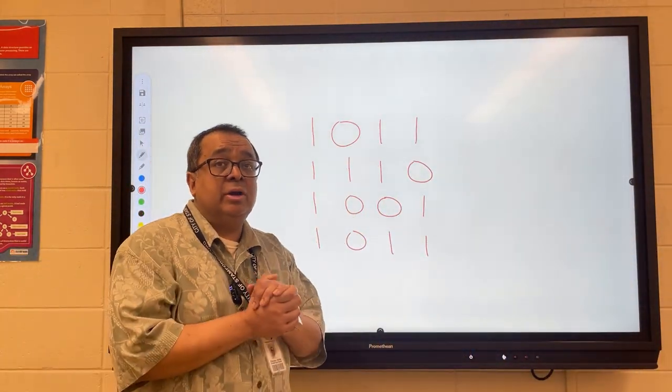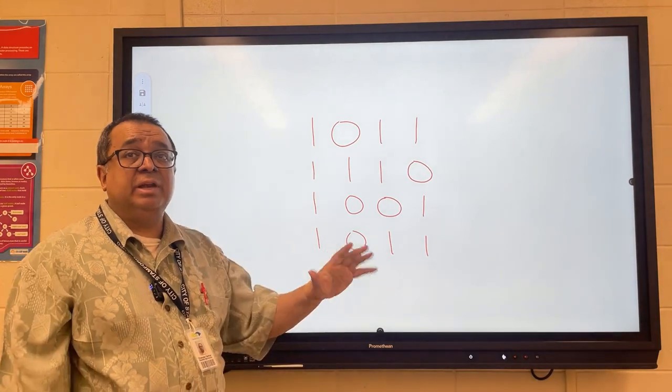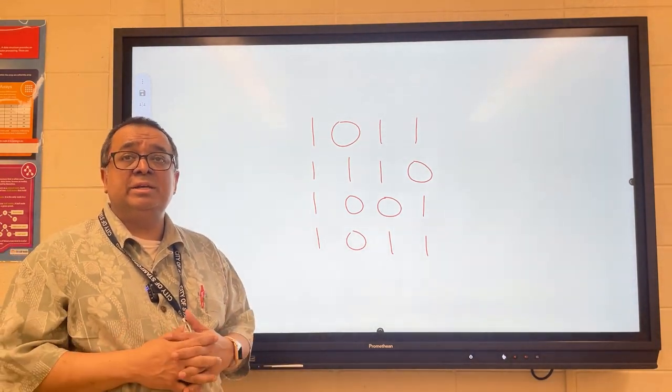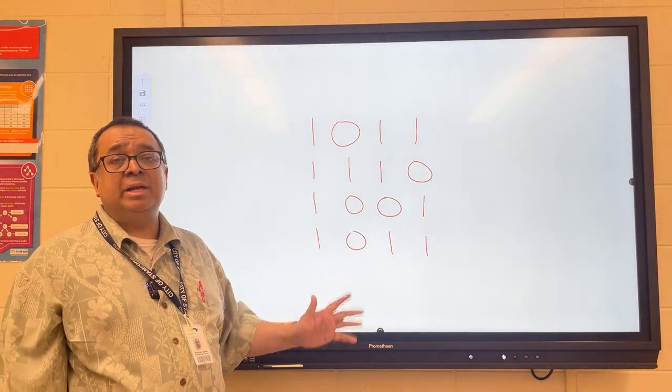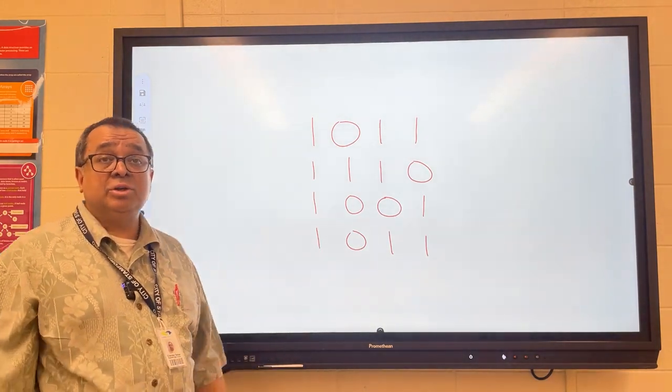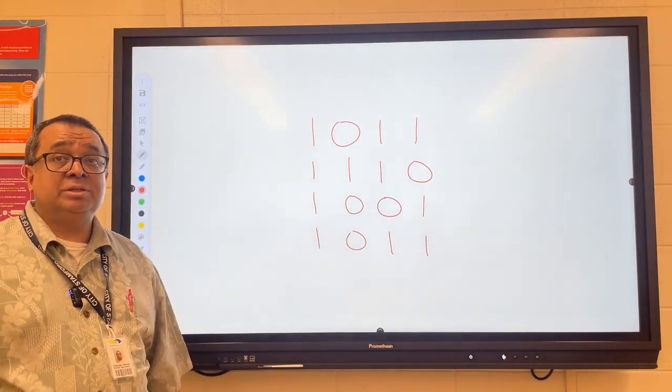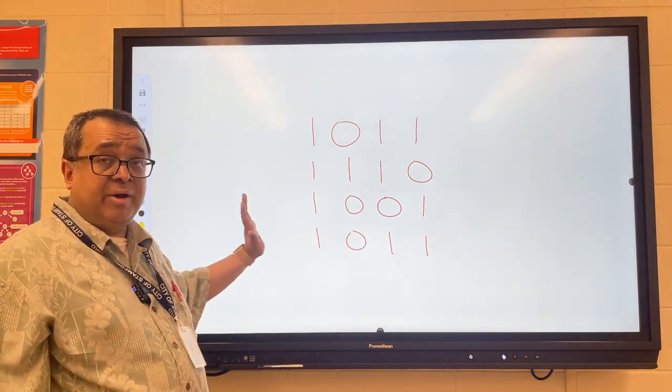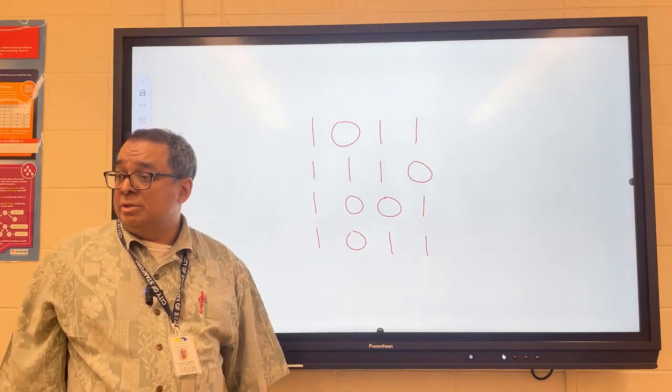So what I'm doing here is just starting off reviewing one of the three schemes that we're going to be discussing to ensure data integrity. This one's called parity. We're going to learn two others today: one's called checksum and the other is called cyclical redundancy checks or CRC. But I wanted to start off by reviewing parity.